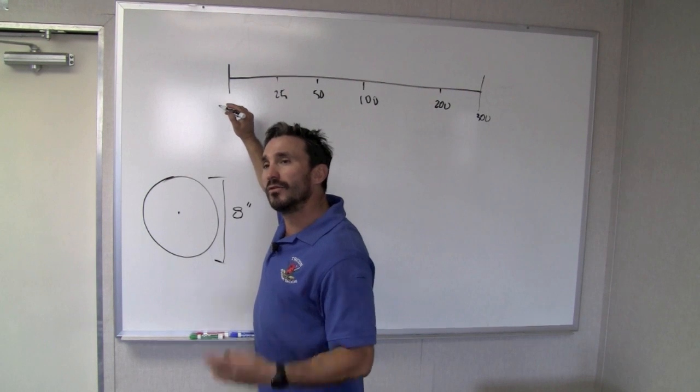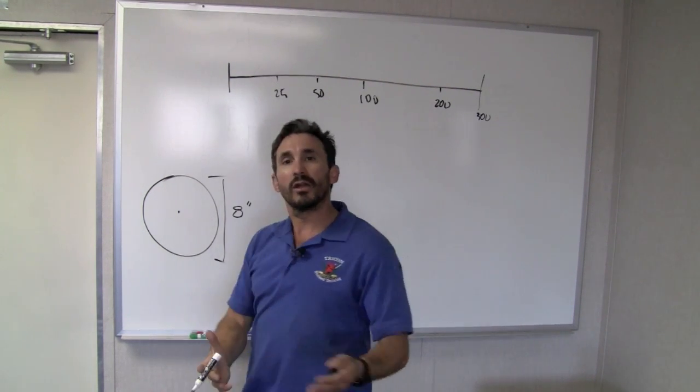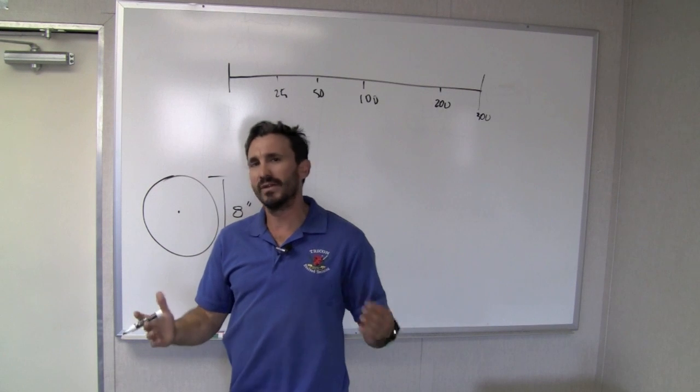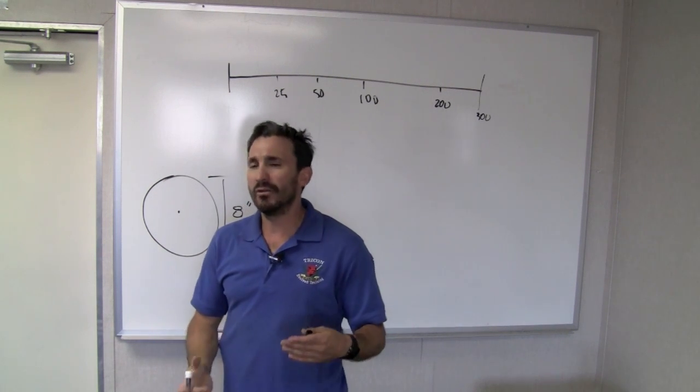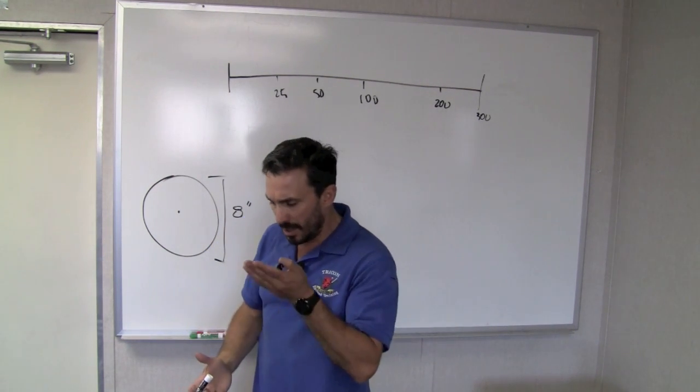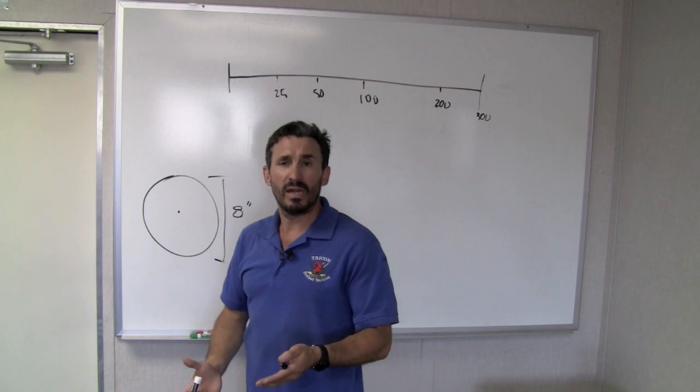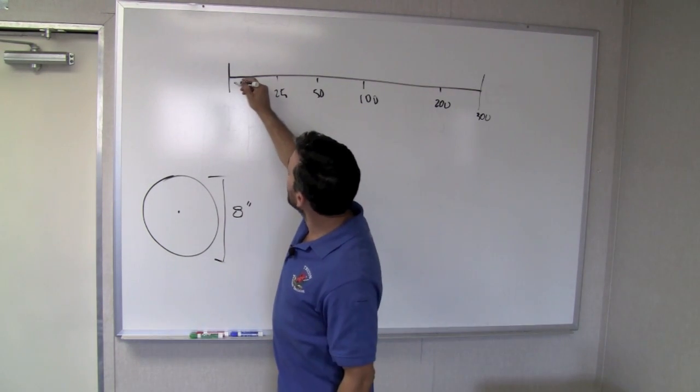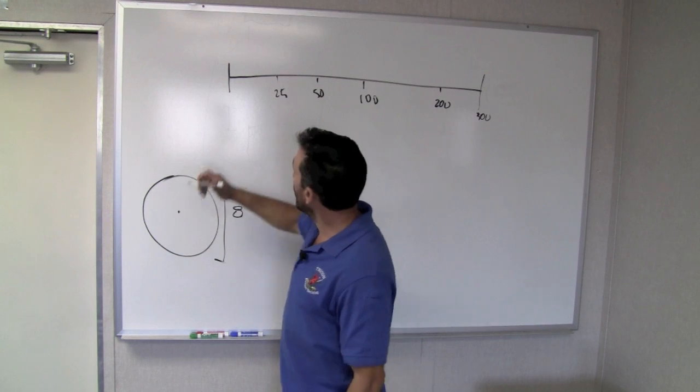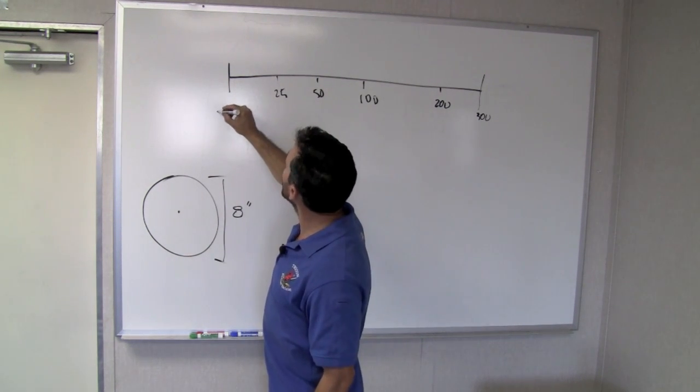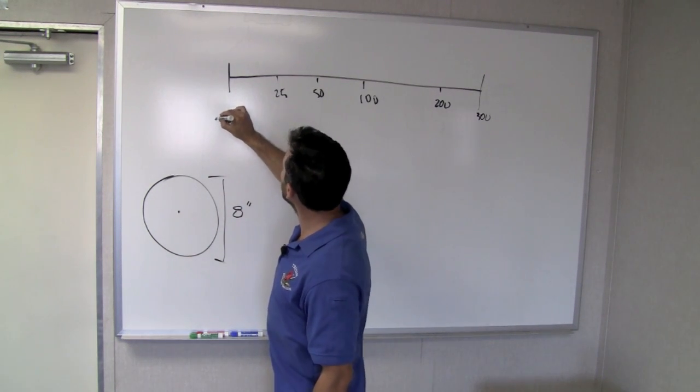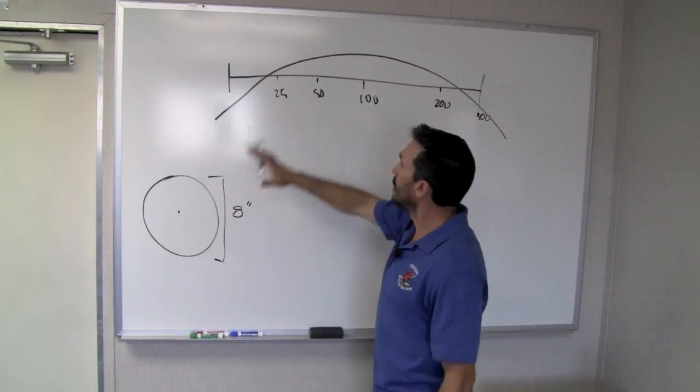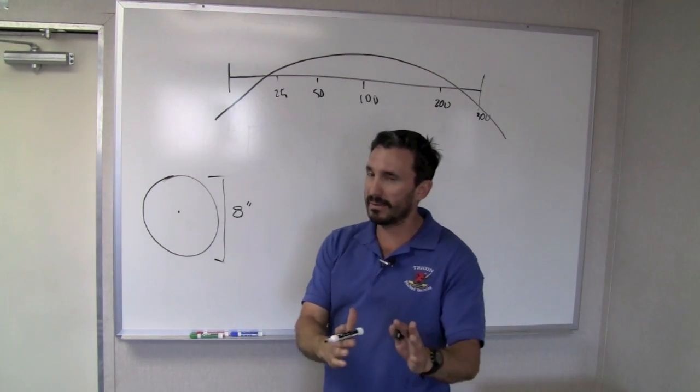My bullet is going to start below my sight line because of the height over bore. So most shooters, most M4 variants are going to have a two and a half inch offset, which means that my sight is generally going to be about two and a half inches above my bore. So right off the bat, I'm starting two and a half inches below the target, and we go into that during the class. And so what you're going to get is you're going to get basically some sort of arc that's going to look like this. And again, not to scale.